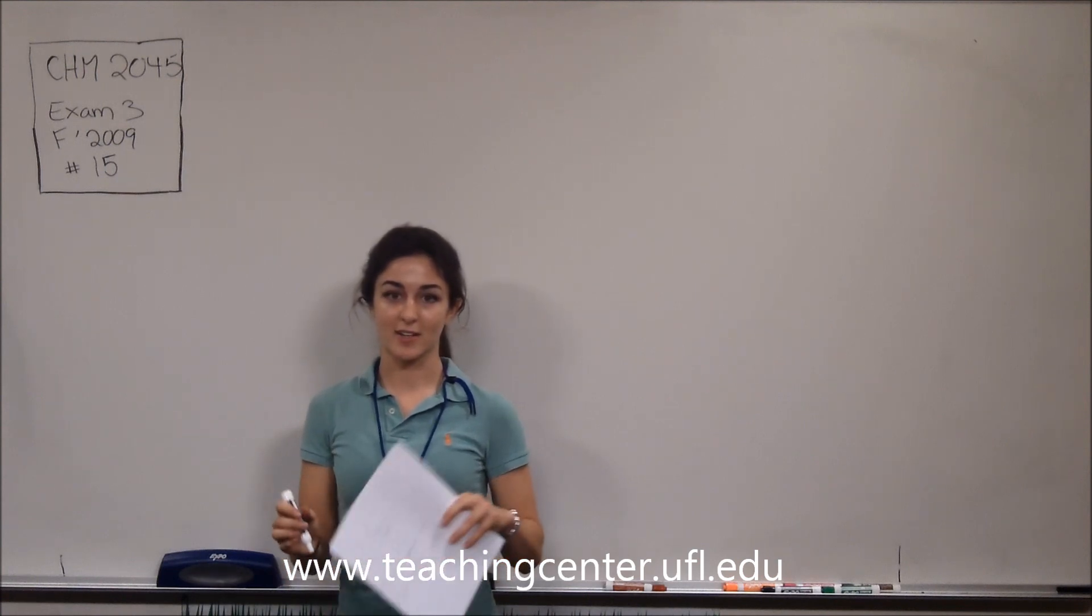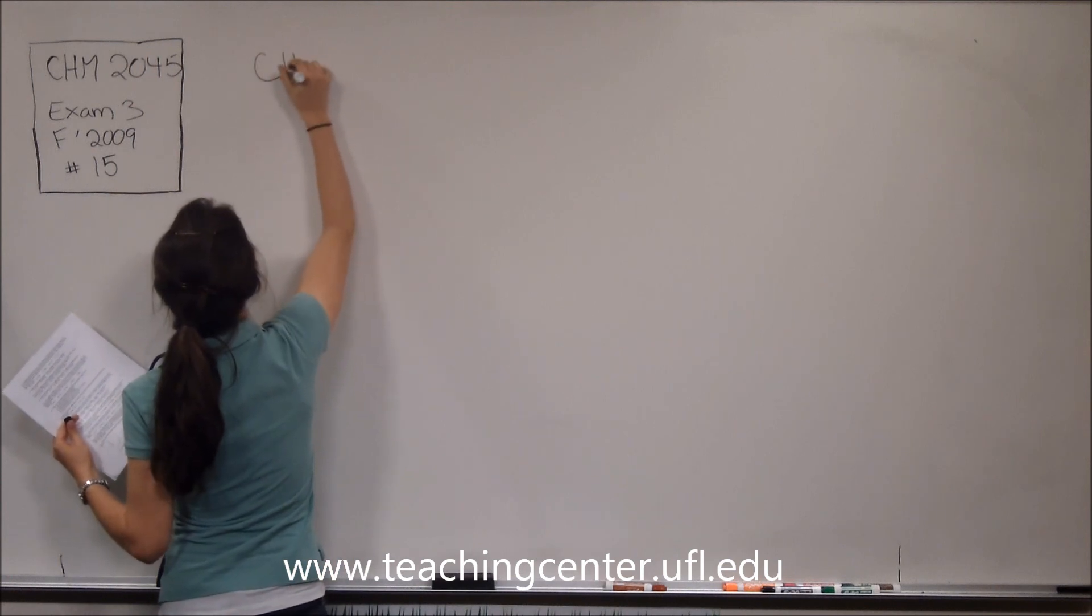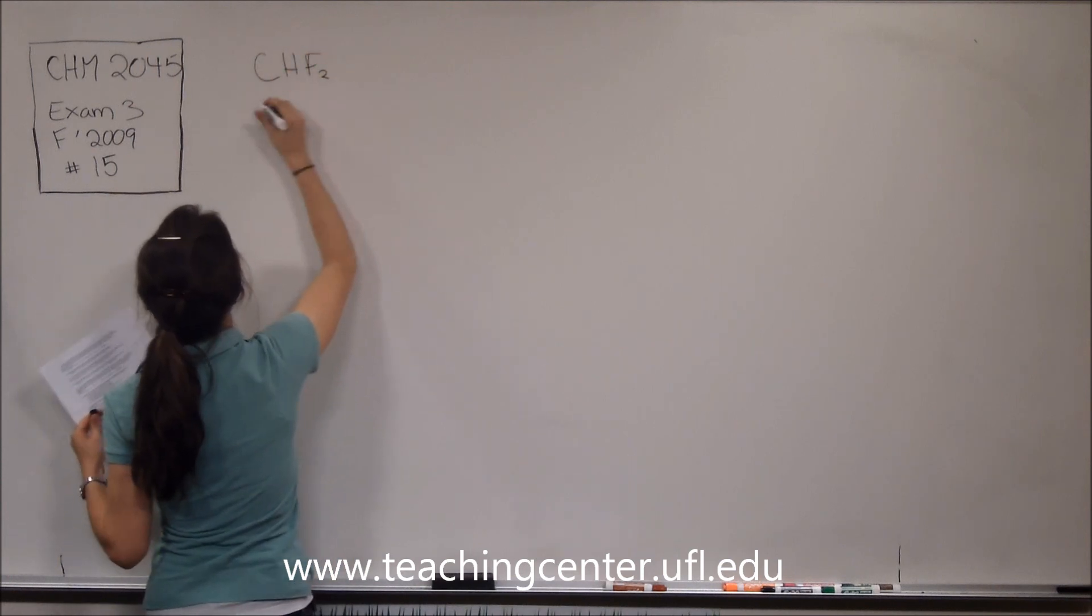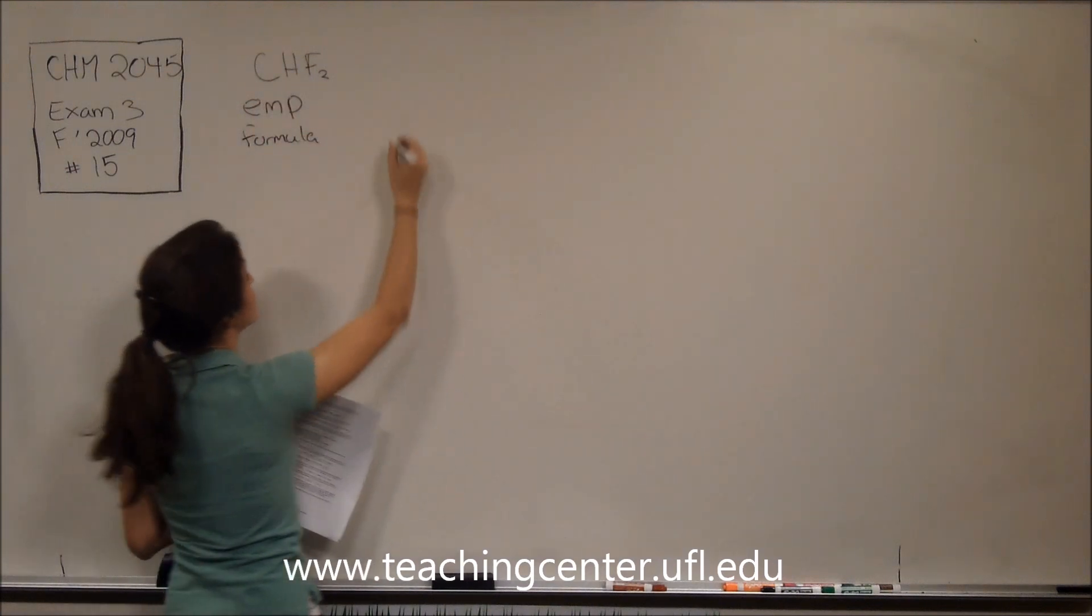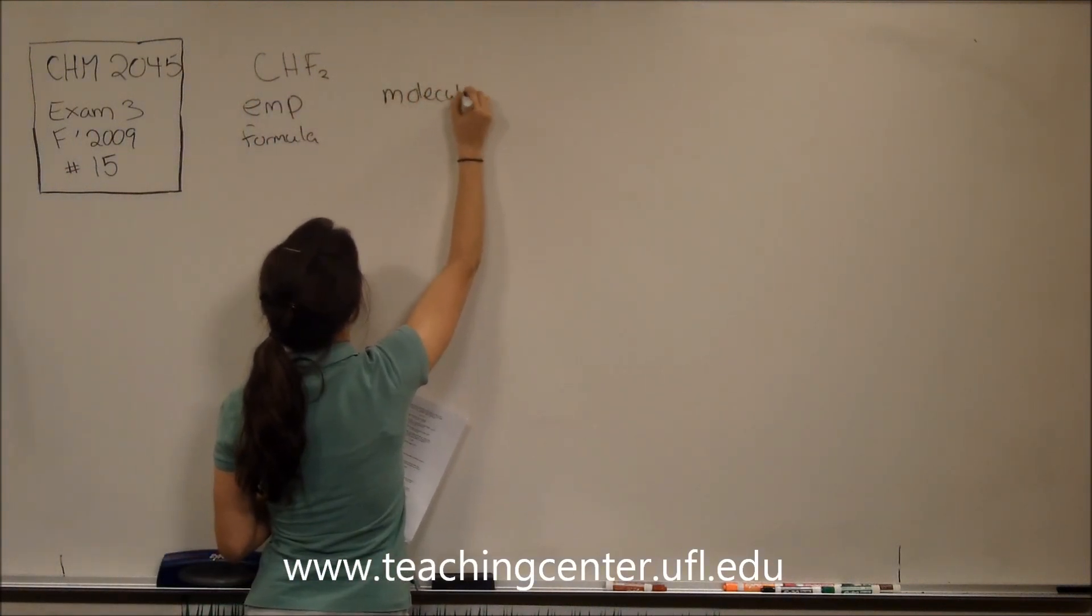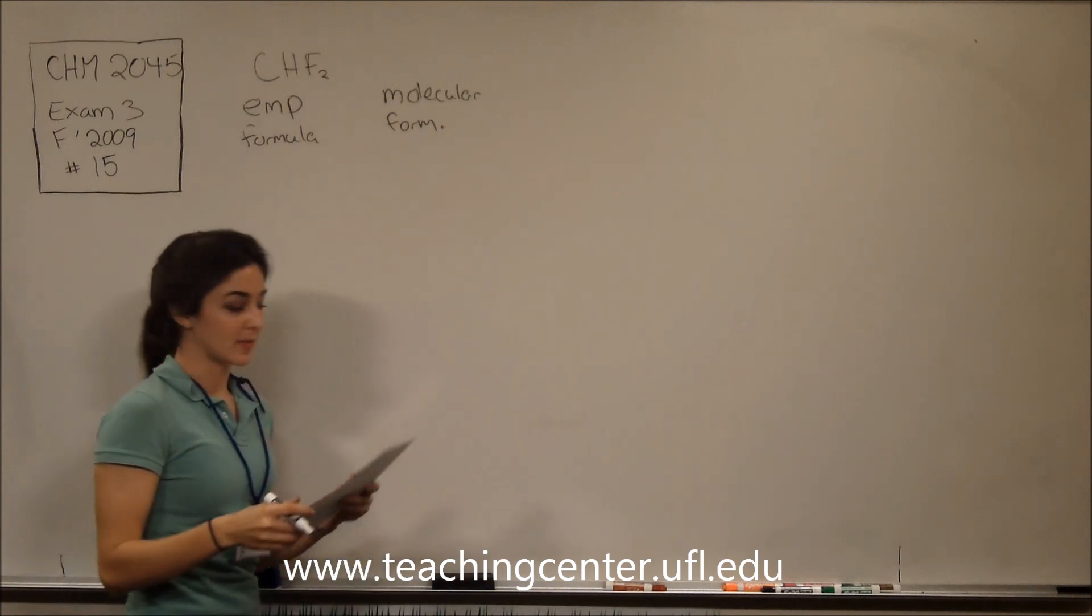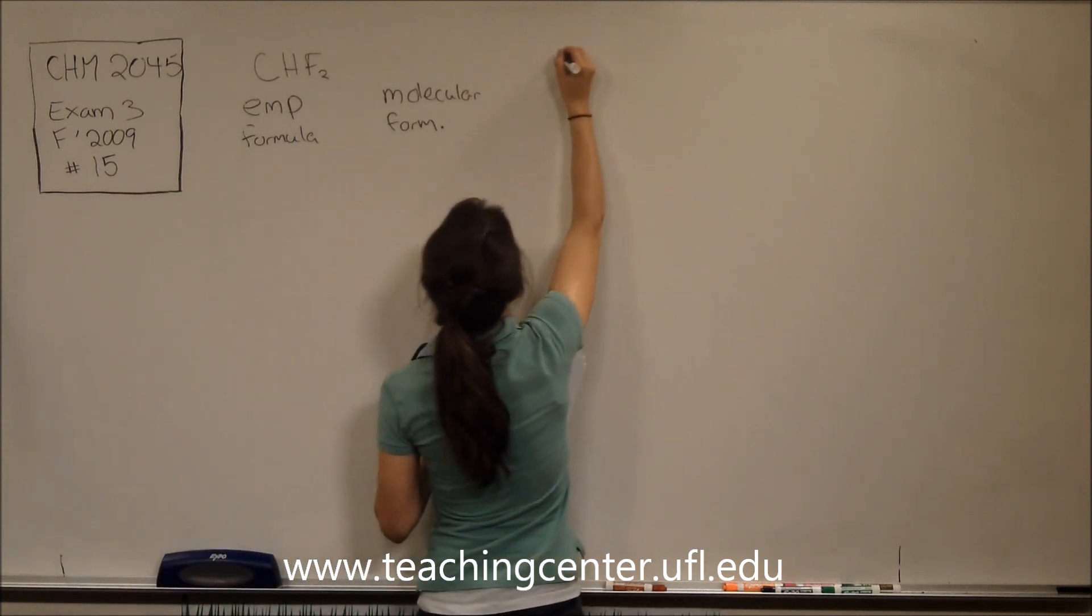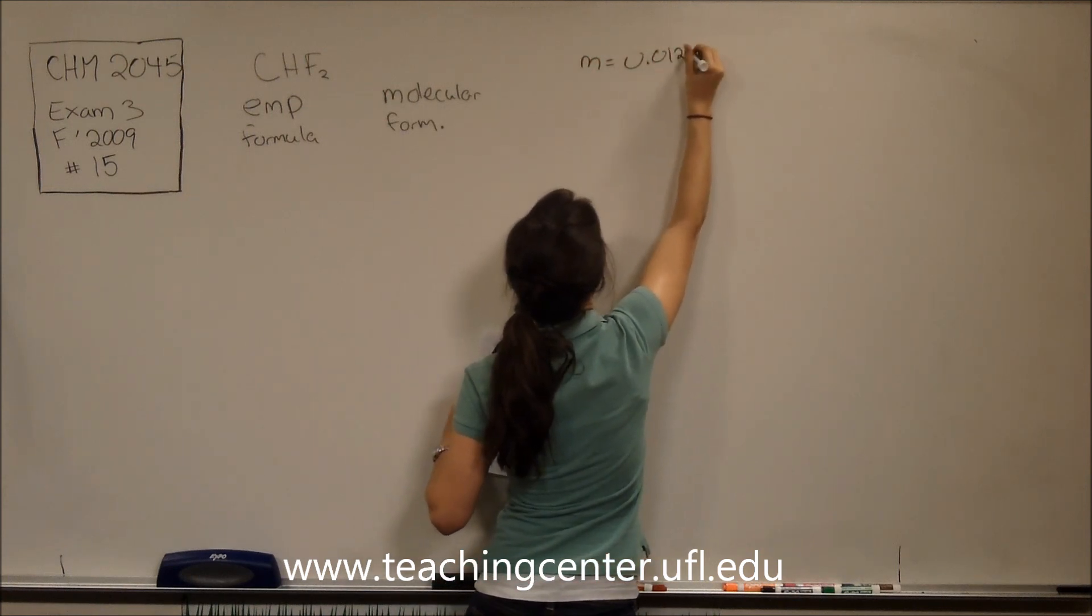So the first thing we'll do is write down the things that are given in the problem. So it asks us to find the molecular formula, and it gives us a variety of information, such as the mass, which is 0.0125 grams.